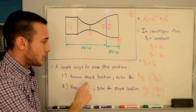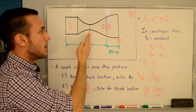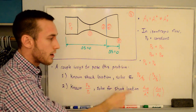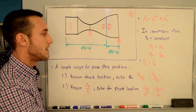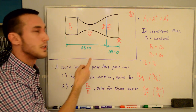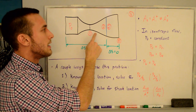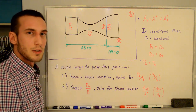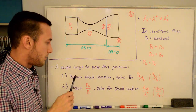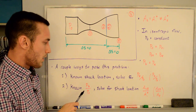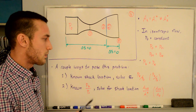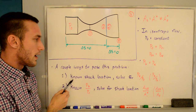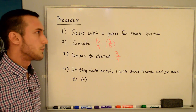When I say shock location, I'm not talking about the axial position but rather the area ratio ANS/AT. To relate this to the actual position, you need the nozzle geometry showing how area ratio changes with axial position. The approach here is method 2: given PB/P0, solve for shock location by iterating using method 1.